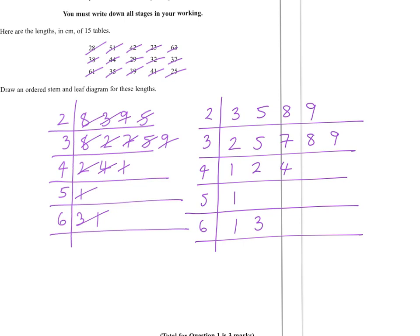We're going to have to draw a key as well, so we could say for example that two, three drawn like that in the stem and leaf diagram, that would be the same as a length in centimeters of 23. Okay, so that's question one.